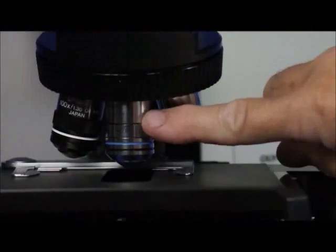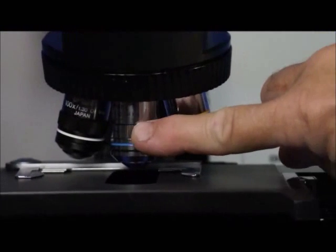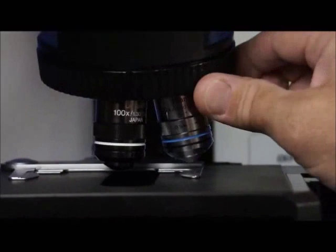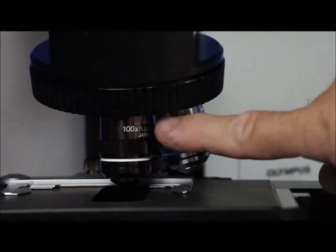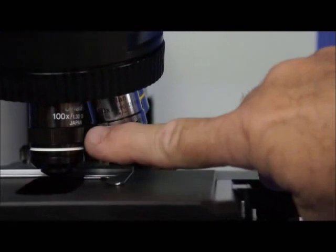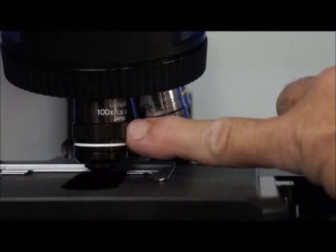The next one over is a 50 oil objective lens, which has an iris diaphragm. And the third one is a U-plan fluorite 100x objective lens, also with an iris diaphragm.